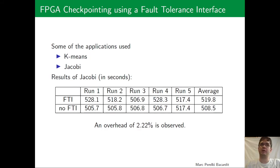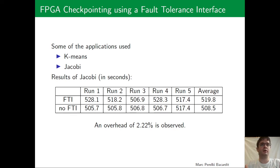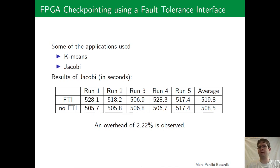Some of the applications I used were the K-means application and then Jacobi. Specifically for Jacobi, I ran the application with the fault-tolerance interface library five times, and then five times again without the FDI library. I took the averages and observed an overhead of 2.22% by using the FDI library.